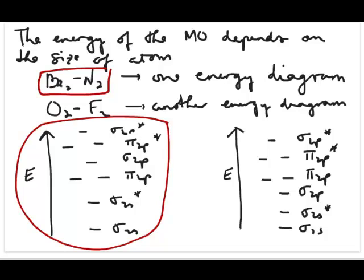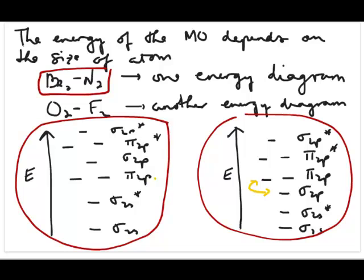And then when you do this with the last two elements on the second period, which is oxygen and fluorine, you'll find that they actually have the following energy diagram. And the only difference, if you look carefully, is that there's basically a flip between these two molecular orbitals. So up till N2, the pi is below the sigma, and then for oxygen and fluorine, the sigma is below the pi.